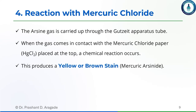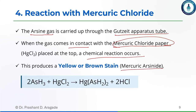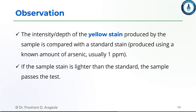The arsine gas produced is carried up through the Gutzeit apparatus tube, which contains mercury chloride paper. When the arsine gas comes into contact with the mercury chloride paper, a reaction occurs forming mercuric arsenide. This mercuric arsenide produces a yellow or brown color stain on the mercury chloride paper. The intensity of the stain is directly proportional to the amount of arsenic present.